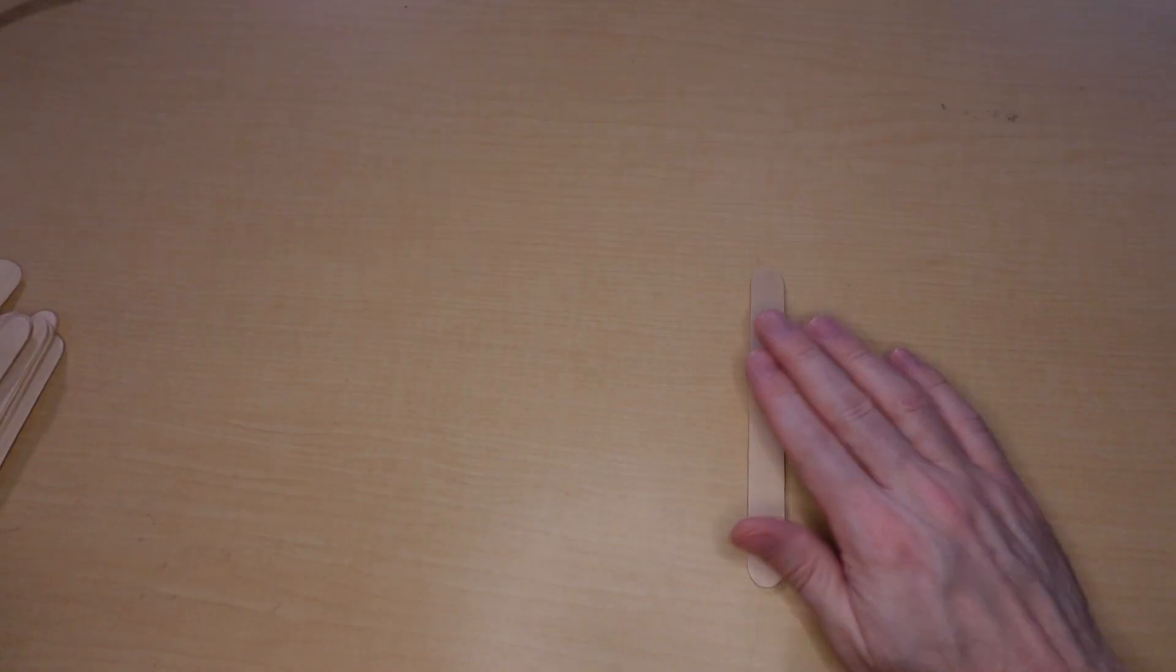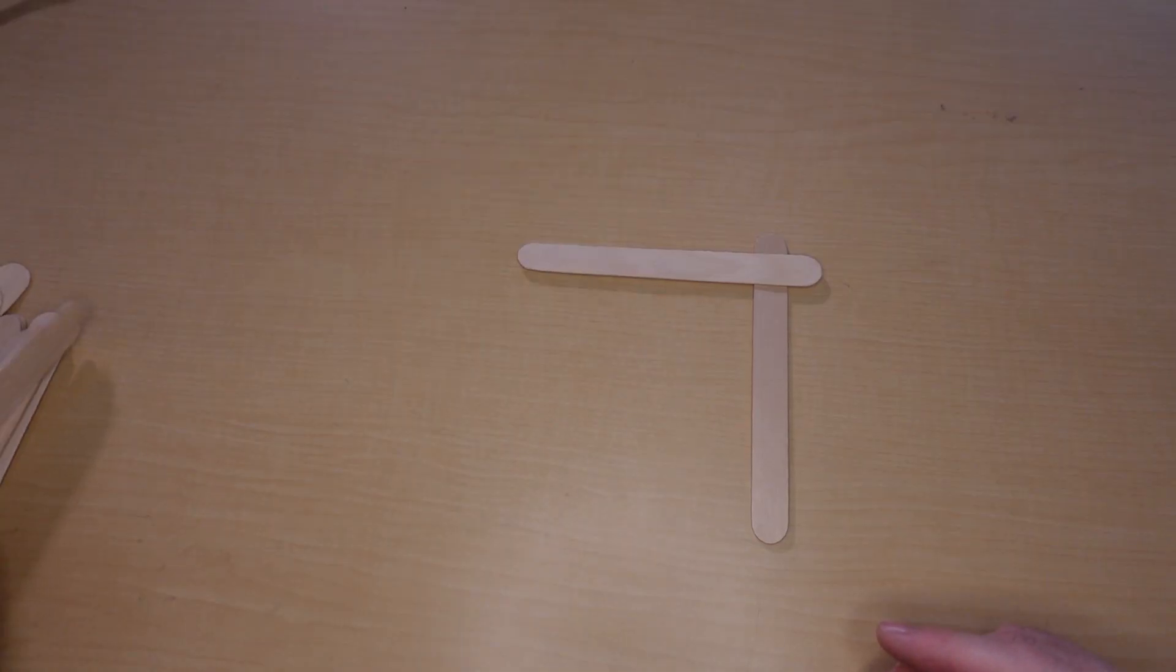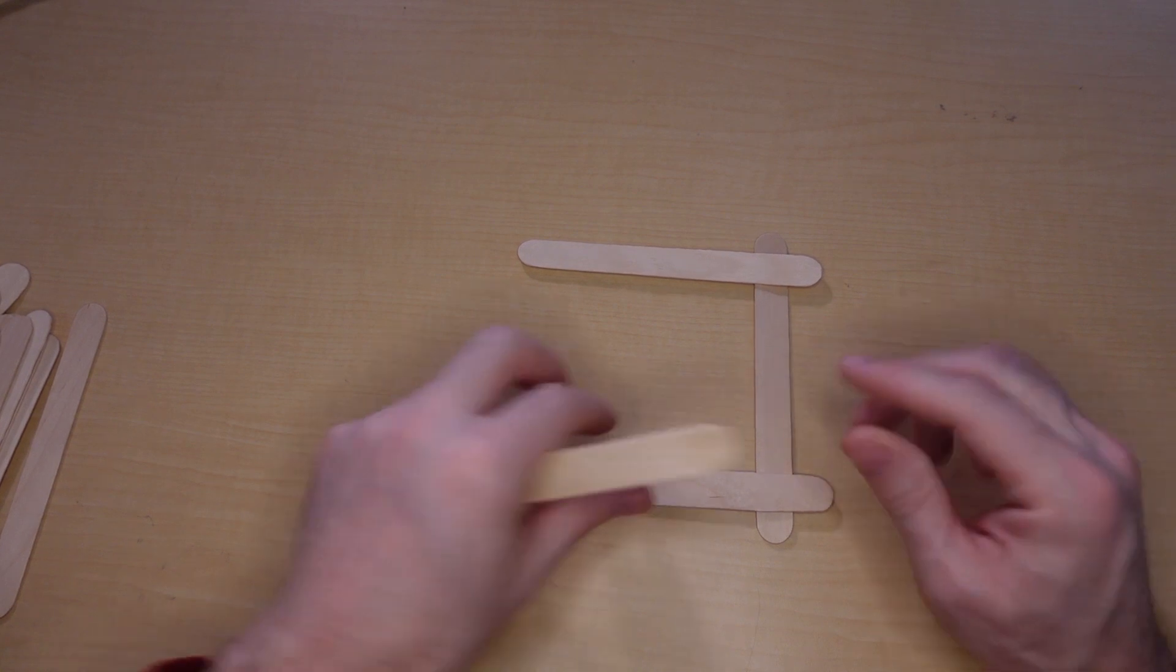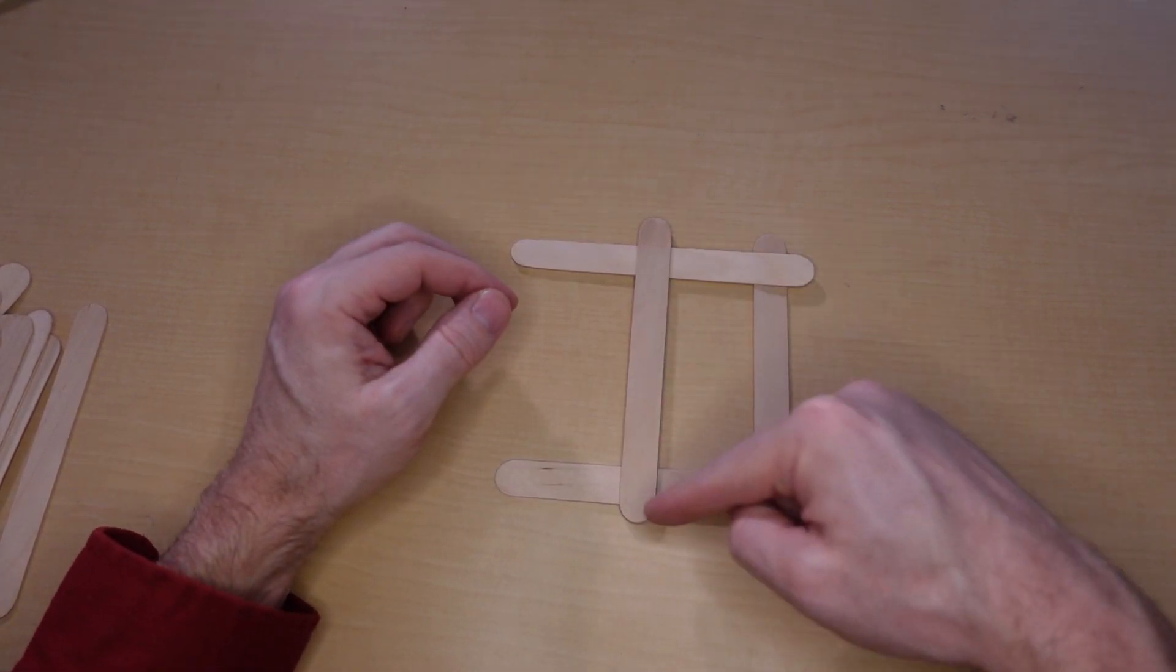And this is how you build it. You start with a stick. There you go. And then you put two sticks on top of it, like this. And then you put another stick on top of that, just like that. So we go over and under.